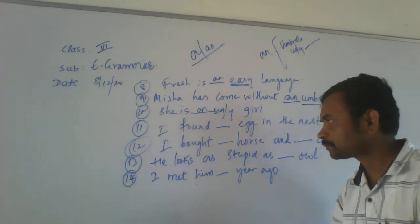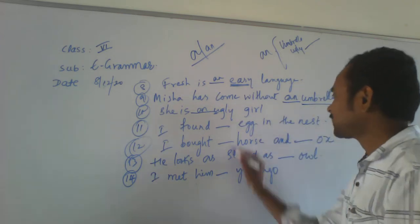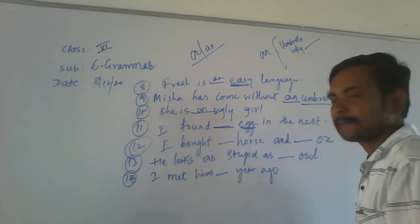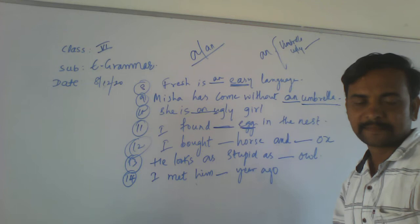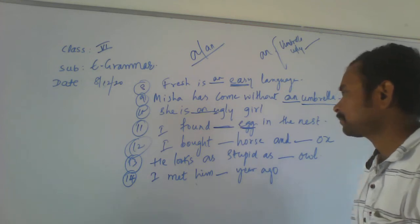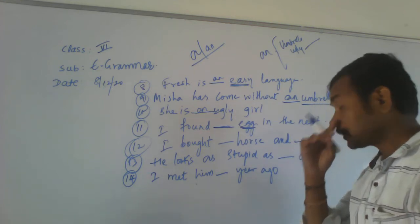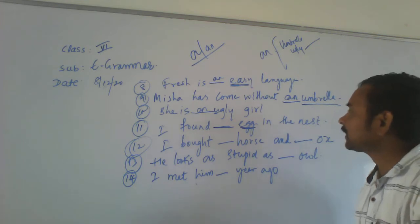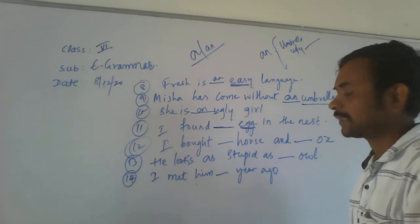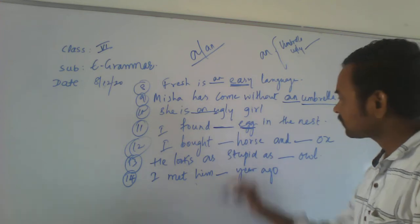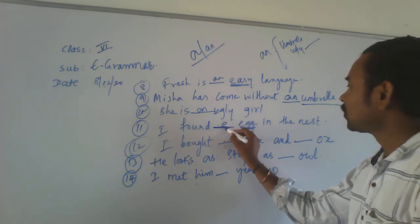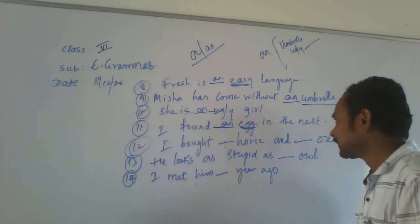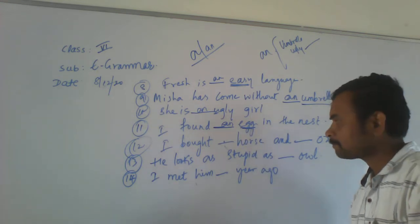Let's see the next one. I found a blank egg in the nest. I found an egg in the nest. The word 'egg' starts with a vowel — E is a vowel. So, I found an egg in the nest.